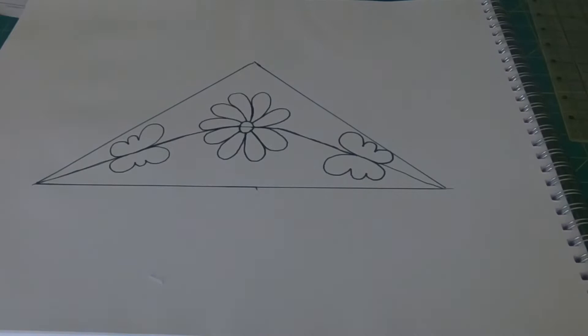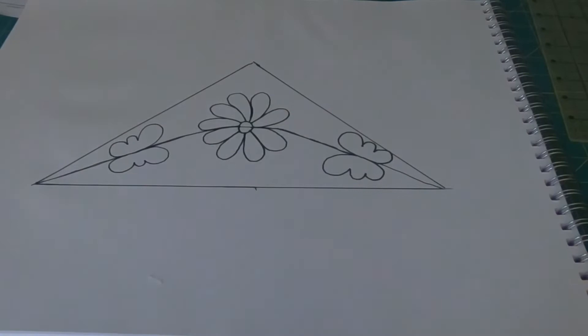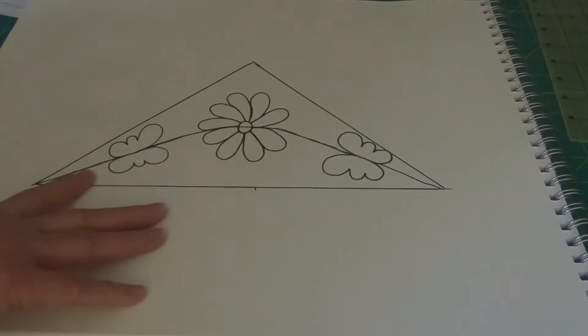You can do this with any other designs. Now if you wanted to, you could come back in and just do some simple stippling or some pebbles around that if you wanted to. If I was going to do this around the edge of the quilt, unless my quilt was very heavily quilted, I would leave this alone. If the quilt was very heavily quilted, then yes, I would come back into this area.